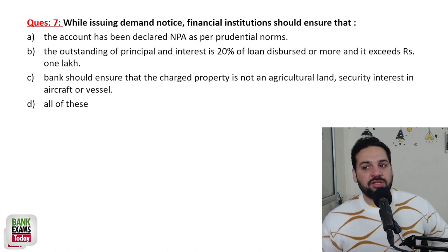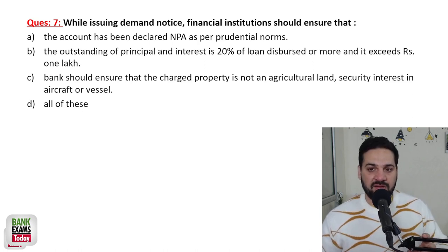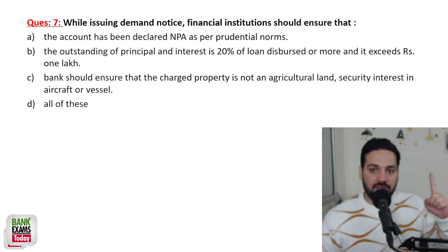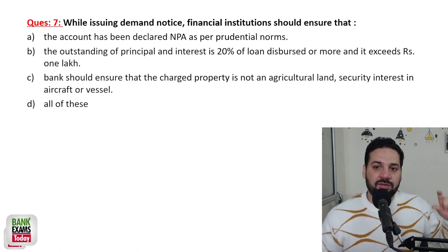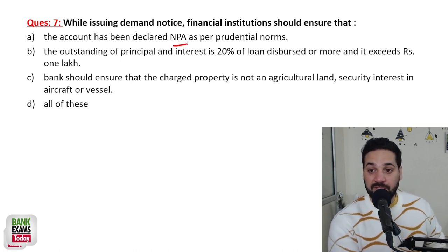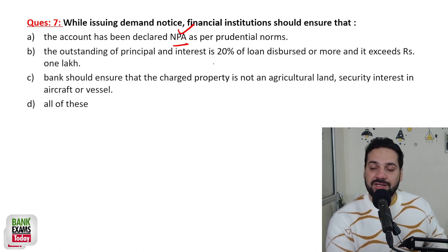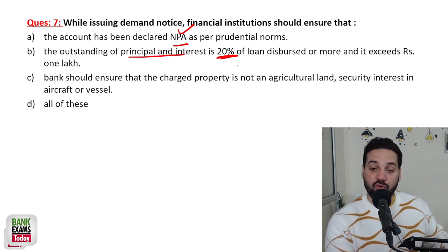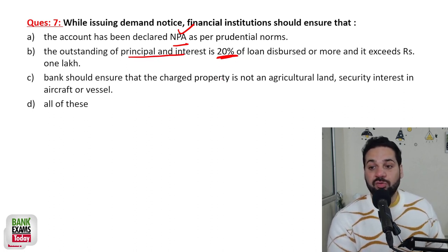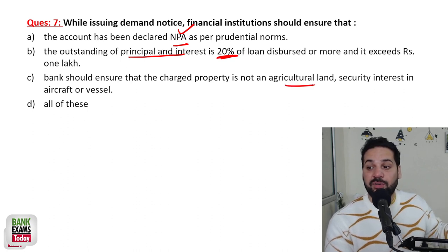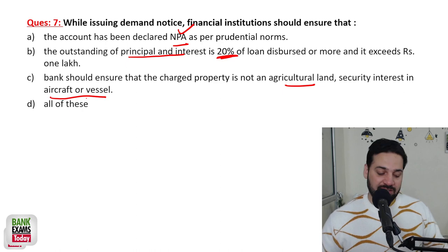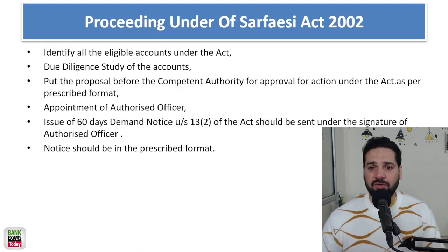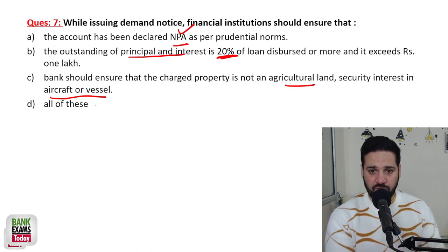While issuing a demand notice under the SARFAESI Act, financial institutions must ensure: the account is an NPA; at least 20% of the outstanding principal and interest is overdue (i.e., not more than 80% has been paid); and the bank should ensure it is not agriculture property, an aircraft, or a vessel — in these cases, notice cannot be issued.